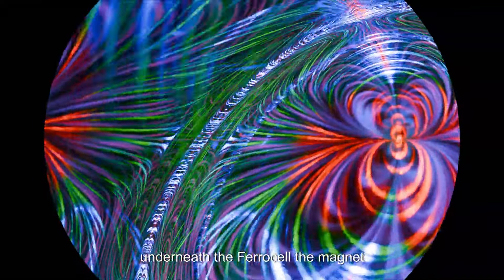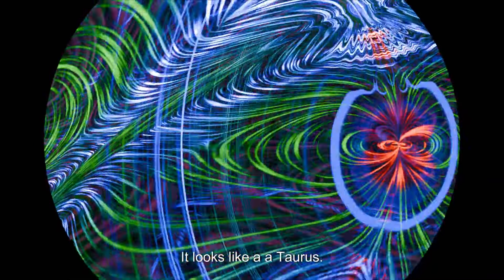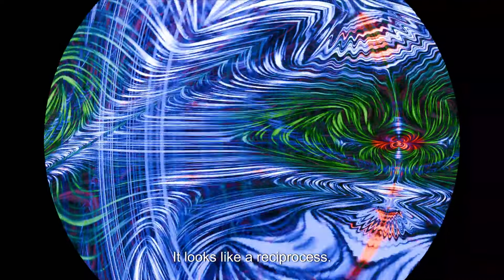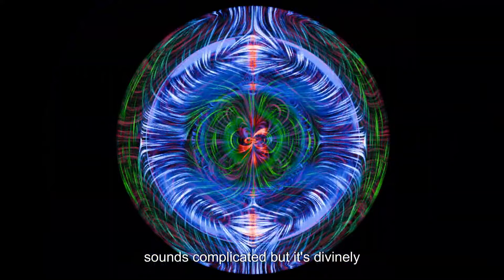As you've seen underneath the ferrocell, a magnet, doesn't matter what shape it is, looks exactly like this. It looks like a torus. It looks like a reciprocal, of course, most people can't visualize, as I can, reciprocating precessional hyperboloid, which sounds complicated but it's divinely simplex.